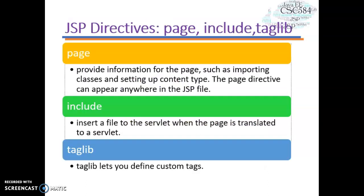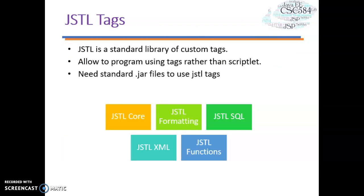Looking at each directive in detail: the page directive lets you provide information for the page, such as importing classes and setting up content type, and can appear anywhere in the JSP file. The include directive lets you insert a file into the servlet when the page is translated, and must be placed where you want the file inserted. The taglib directive lets you define custom tags in your JSP pages, and leads us into JSTL.